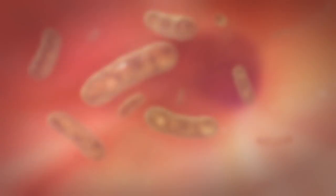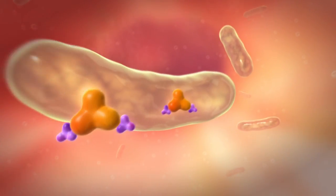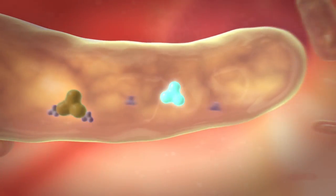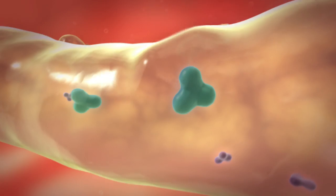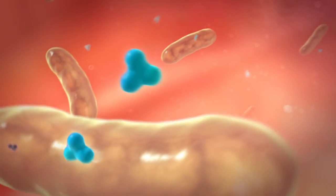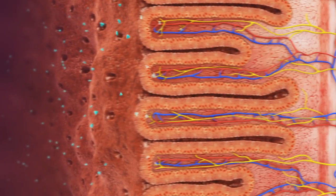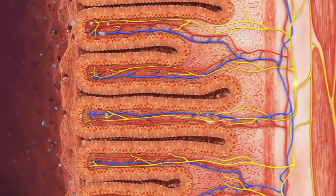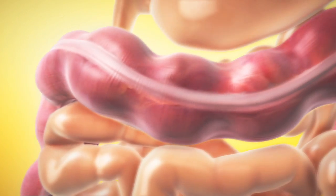The second substance is converted by bacteria in the colon into an active metabolite. This then stimulates nerve endings in the intestinal wall, thereby increasing peristalsis. The contractions carry the bowel content along towards the rectum.